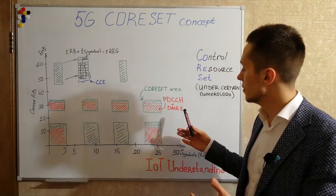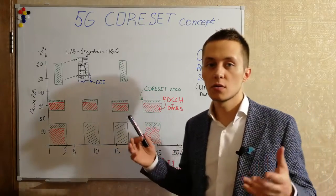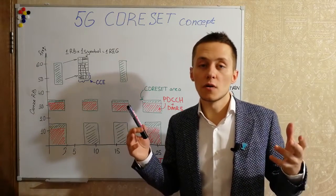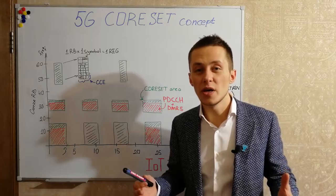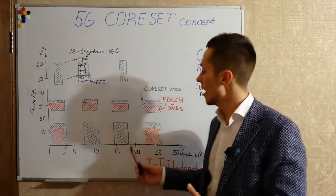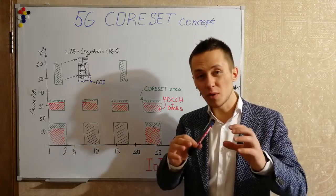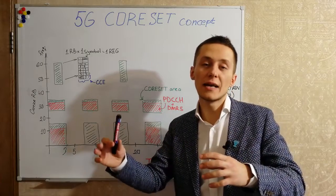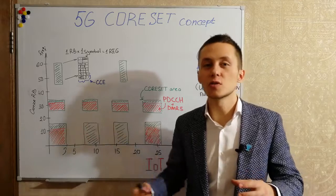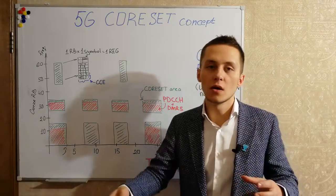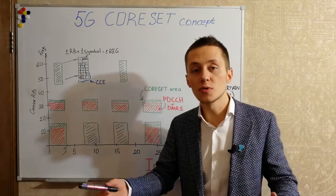The UE can actually know in a very precise way in which area special DCI scrambled with specific identifier to indicate paging, to indicate scheduling information, to indicate some random access response.